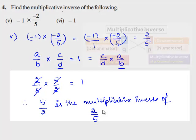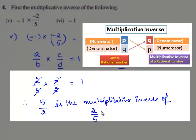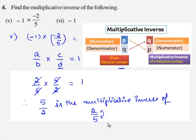Clearly, we observe that 5/2 is obtained by switching the numerator and denominator of the obtained rational number.